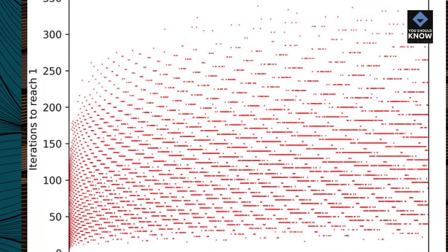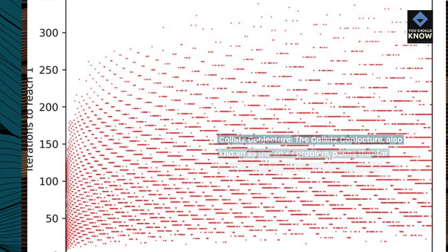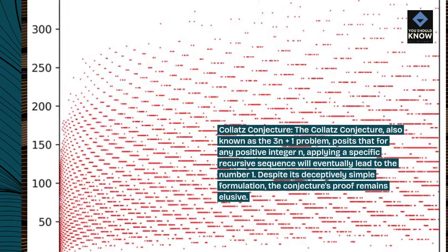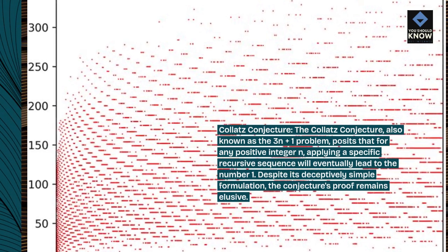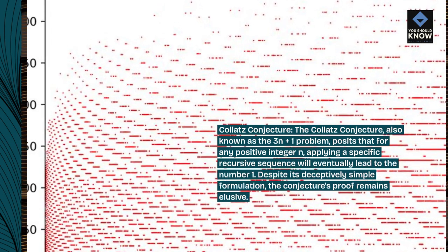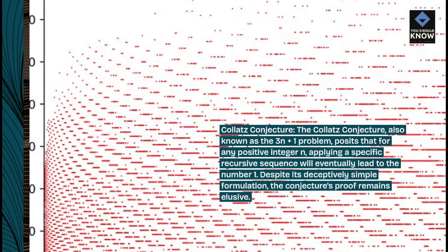Collatz Conjecture: The Collatz conjecture, also known as the 3n plus 1 problem, posits that for any positive integer n, applying a specific recursive sequence will eventually lead to the number one. Despite its deceptively simple formulation, the conjecture's proof remains elusive.